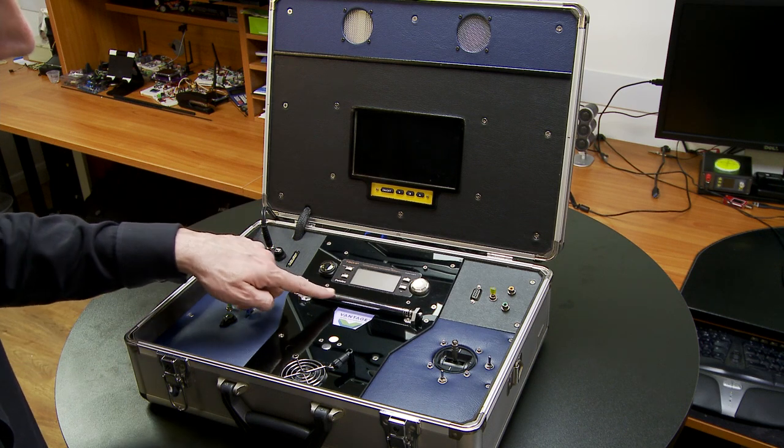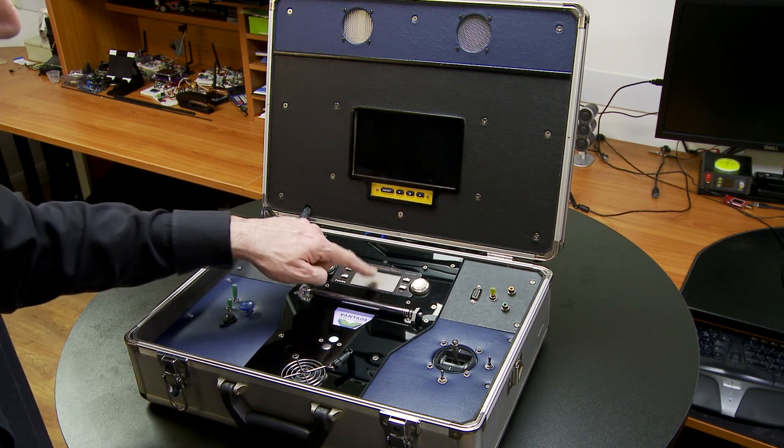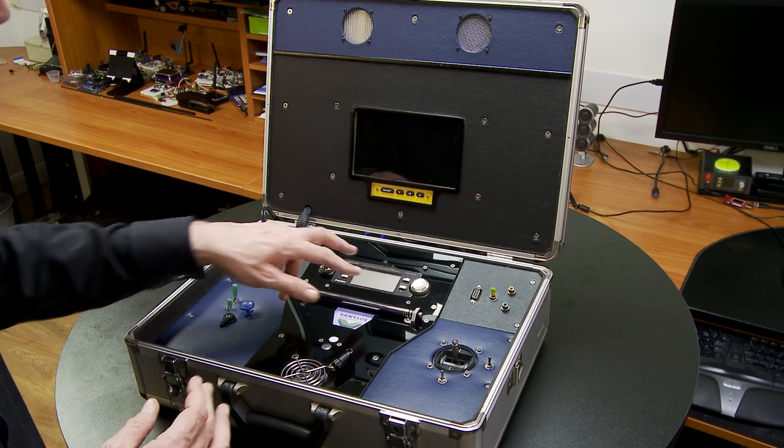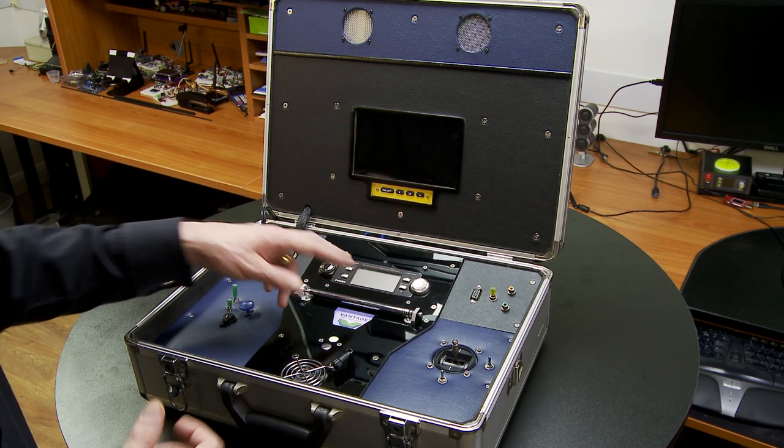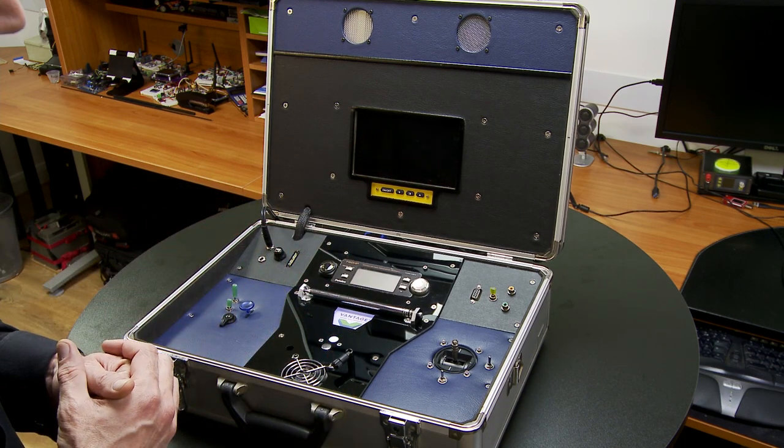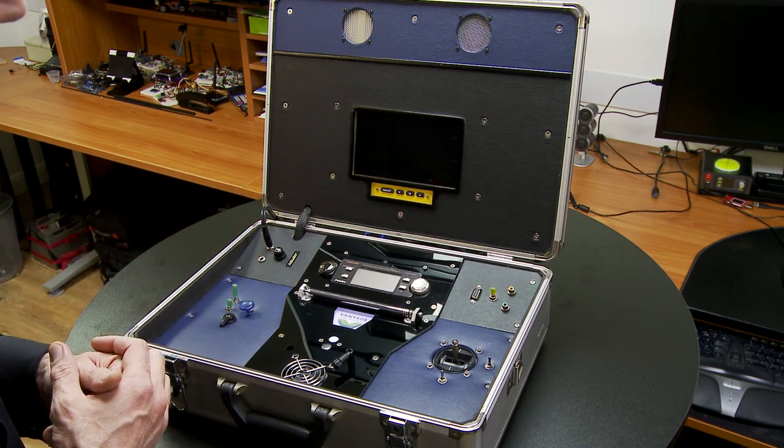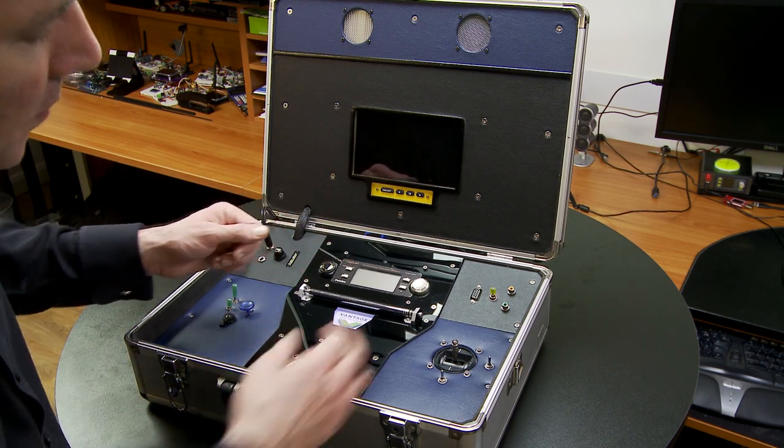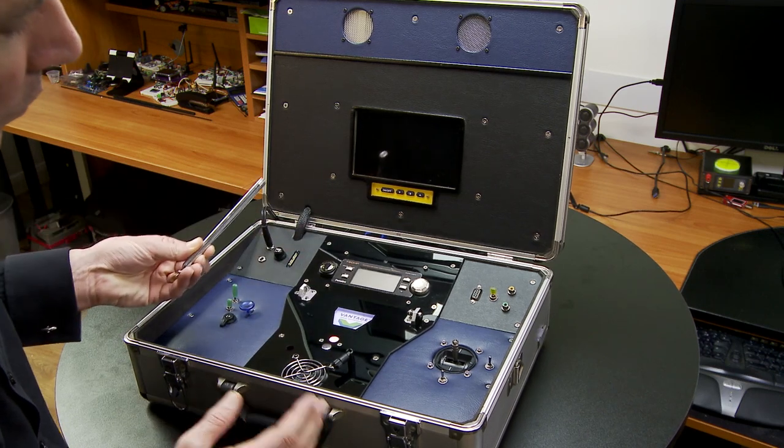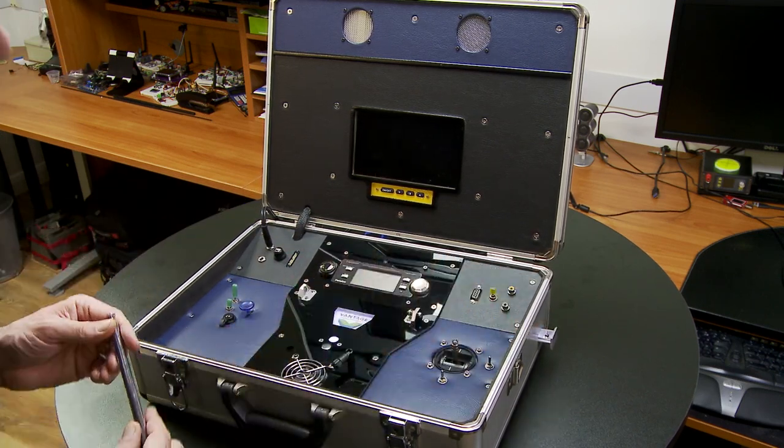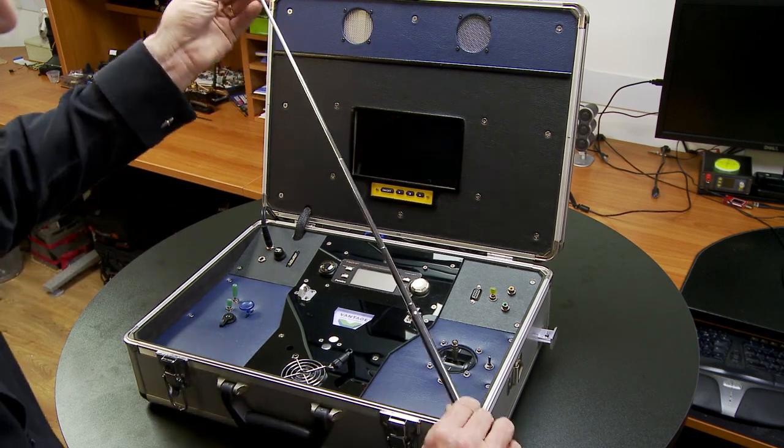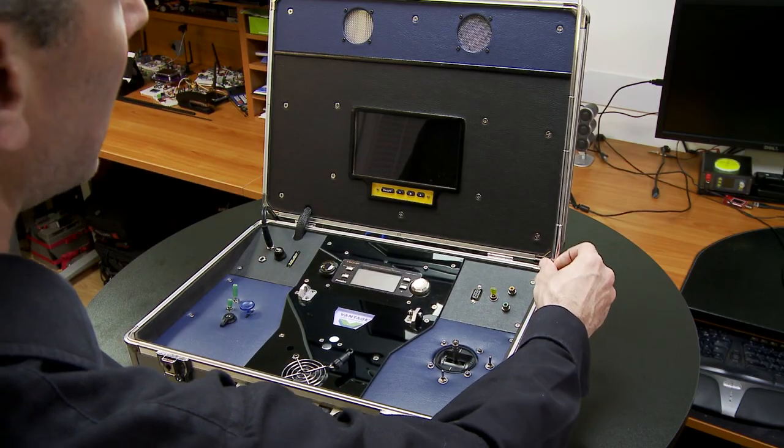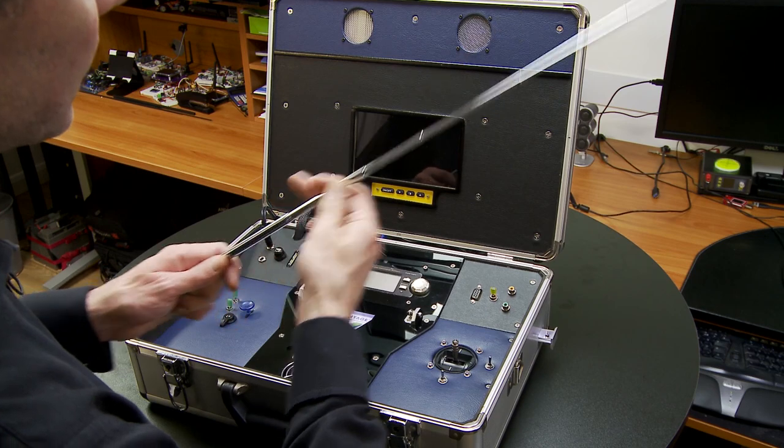Now what you see here is the antenna for the Futaba RC receiver and transmitter. This is back when we had FM modulation rather than 2.4 gigahertz like Spektrum. This is a telescopic antenna and I've made a custom mount. So when I remove the antenna the mount there comes out and then we can just screw the antenna in there.